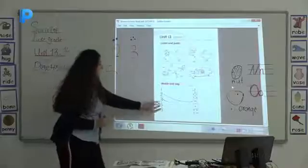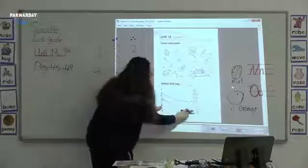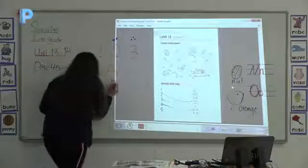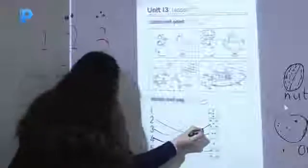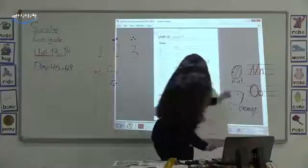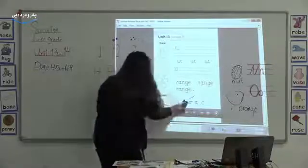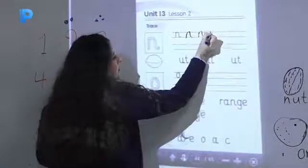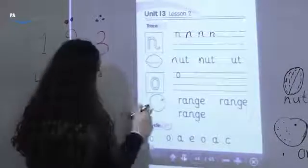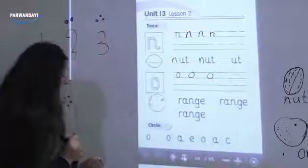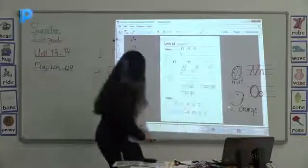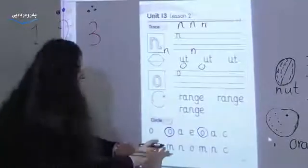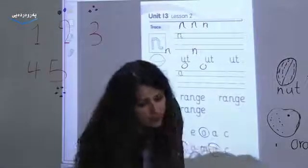4s — one, two, three, four. Match them together. 5 — this one: one, two, three, four, five. And this is 5. This is N — N, N, nut. Nut. This is orange — O, O. Circle the N — N, N. This is N, N. We have 2 N's. Circle them.